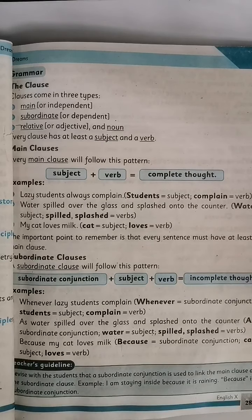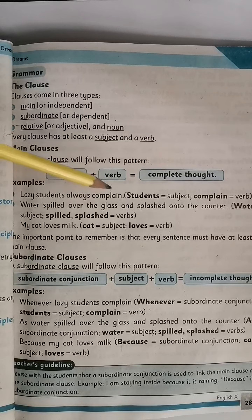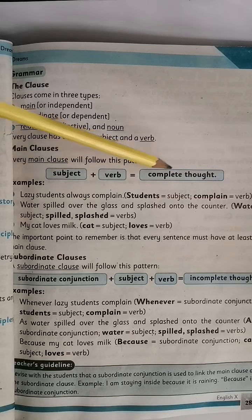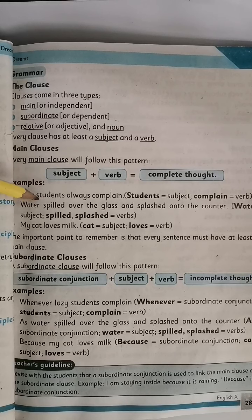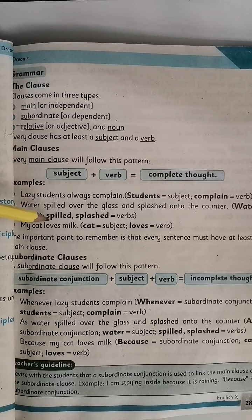Now let's discuss clauses. There are three types: main clauses, subordinate clauses, and relative clauses. Main clauses follow the pattern of subject plus verb and have a complete thought. For example: 'Lazy students always complain' — subject: lazy students, verb: complain. 'Water spilled over the glass and splashed onto the counter.' 'My cat loves milk' — subject: my cat, verb: loves.